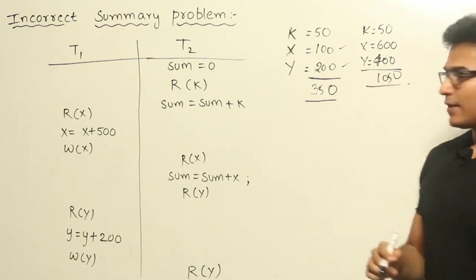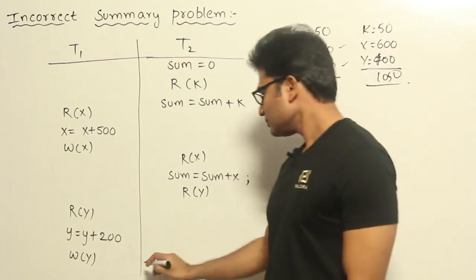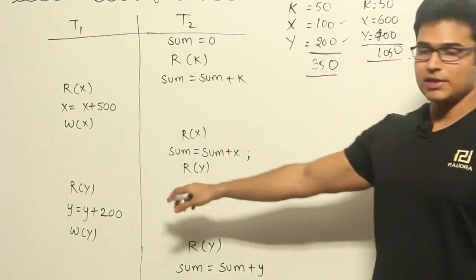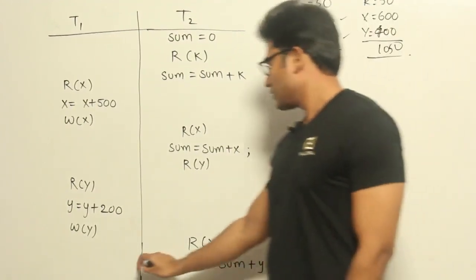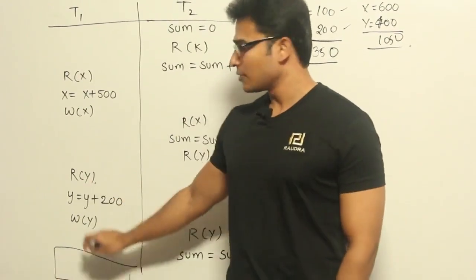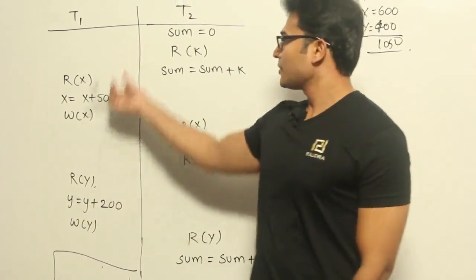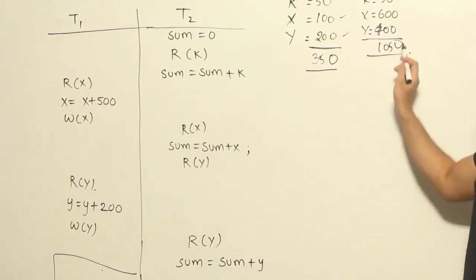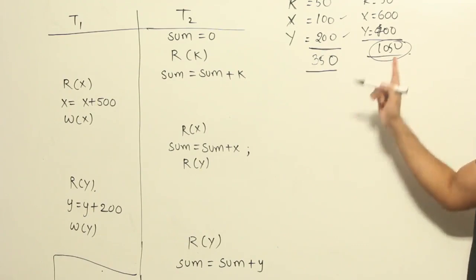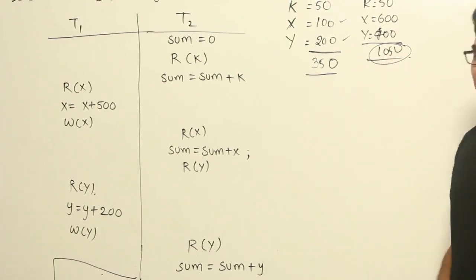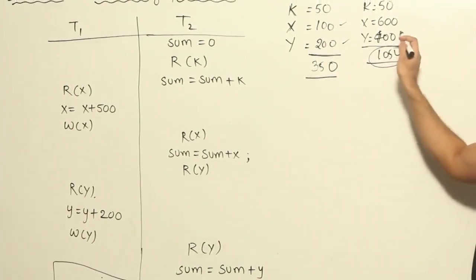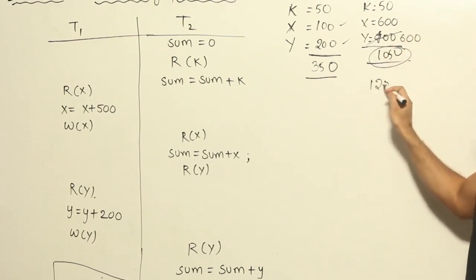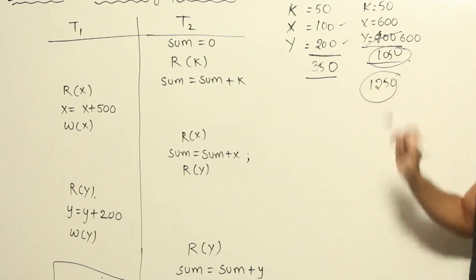Now assume that after you have read the value of Y, again the value of Y has been incremented by 200. At this point, let us say again the value of Y has been incremented by 200 by the same transaction or some other transaction, right? You have computed the summary here and you have given that the total sum is 1050. And after computing the summary, someone is actually updating the value. Then what happens is, if this one is again incremented by 200, it is going to be 600 and the actual summary should have been 1050, right? So what is the meaning of it?